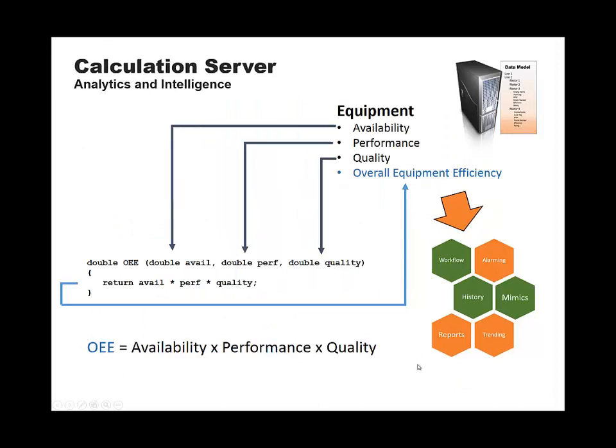For analytics, we have a calculation server with a couple hundred different calculations in the software. The way a calculation works is fairly simple: you define a calculation — or use one of the calculations provided by BSCADA — and if you have a type in your model, you can use a few of the properties as input into the calculation. The output of the calculation will go back out to another property in the model. That calculated value is just another value in the model, so it can be used in alarms, reports, the historian, trends, and workflow.